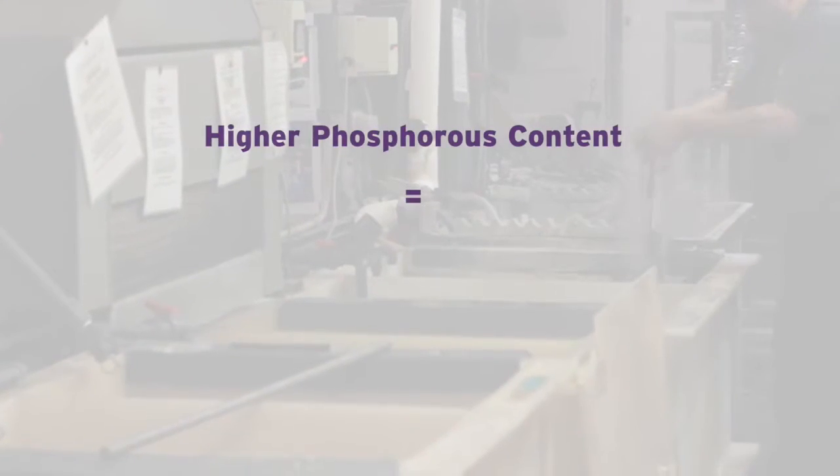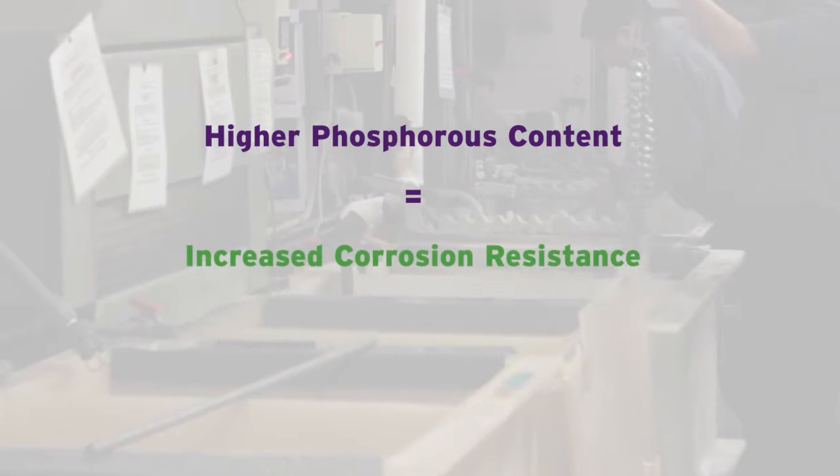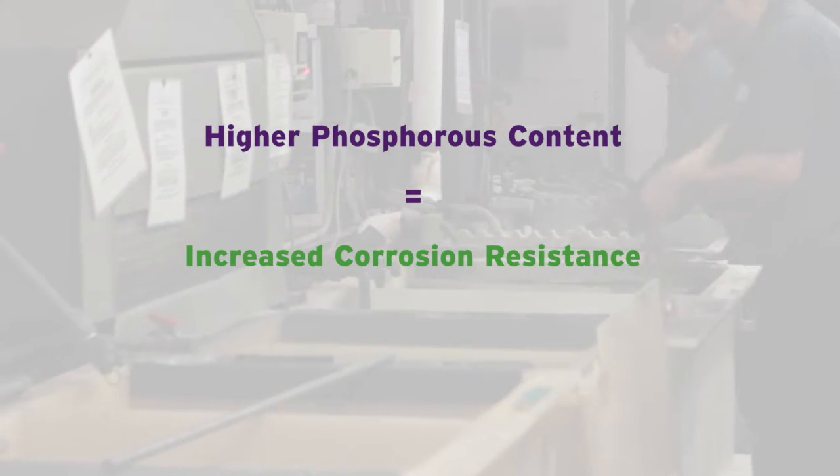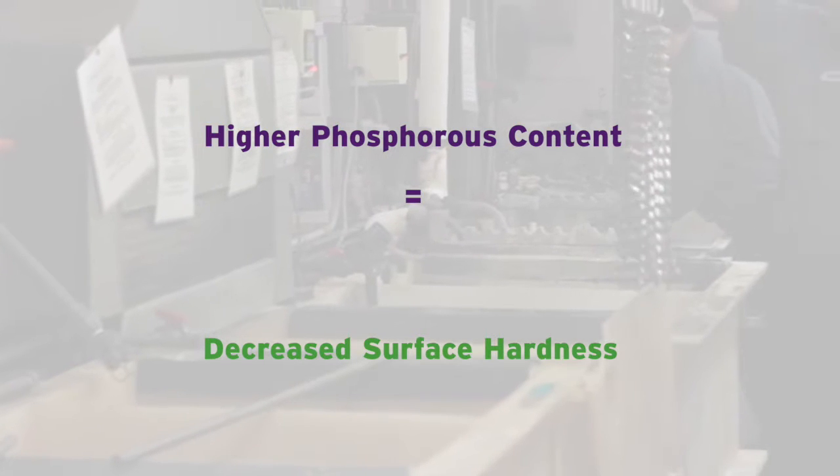In general, as phosphorus content increases, the corrosion resistance of the finish increases as well. However, the hardness of the finish decreases.